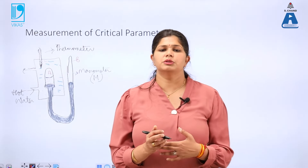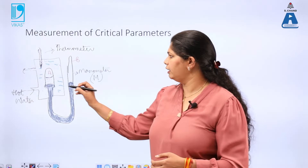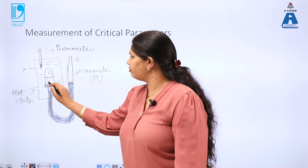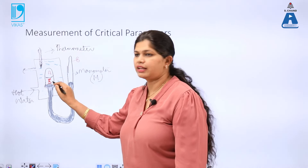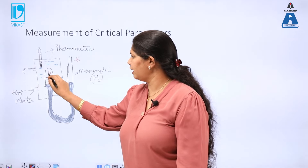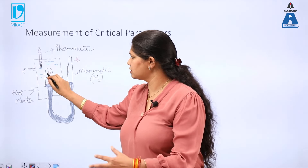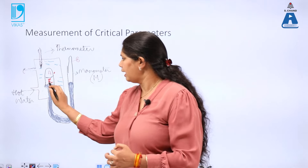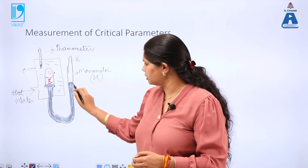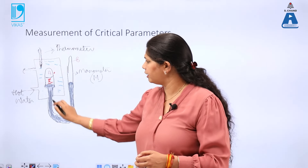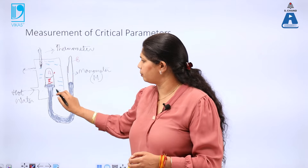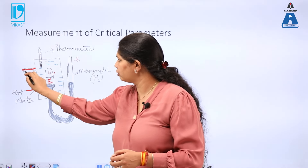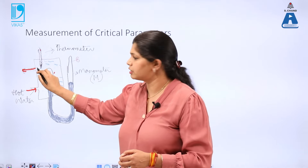The experiment was performed in a particular chamber where we initially have a liquid state, and region A was vacuum only — there were no air vapors. This is a manometer in which mercury is filled. This is a water bath with hot water — this is the inlet and this is the outlet of the water bath — and this is a thermometer.